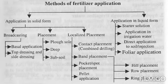Next is placement, where placing the fertilizer below the soil surface with the help of a tool to supply plant nutrients to crops in standing crops is called placement. There are four types: block soil placement, de-placement, subsoil placement, and drill placement.